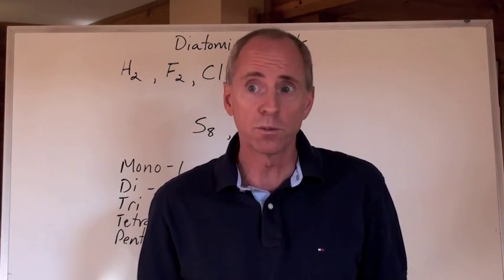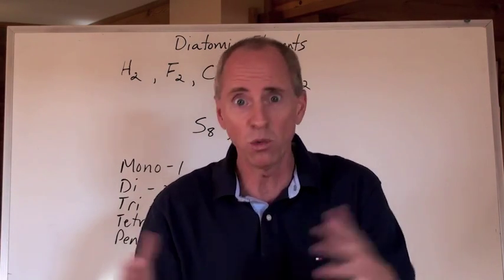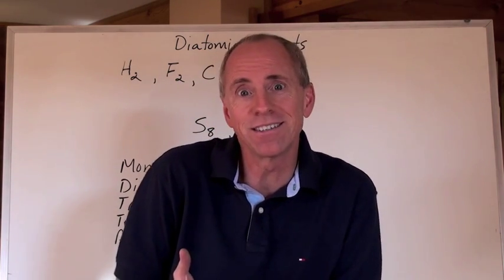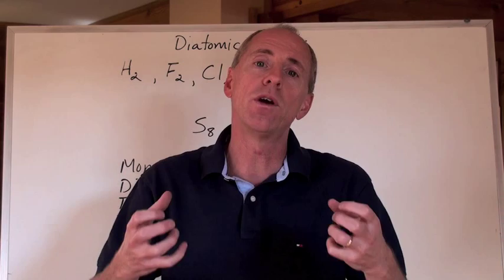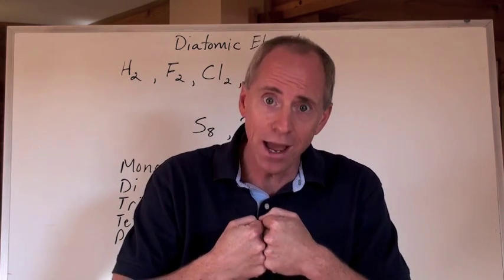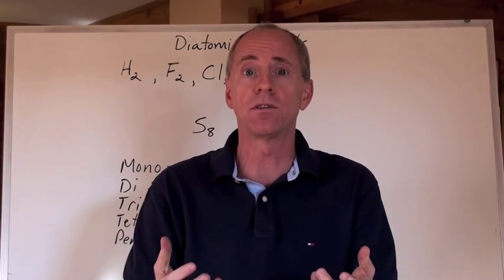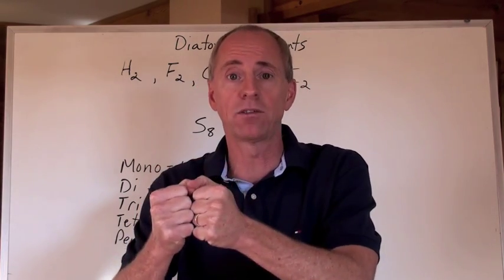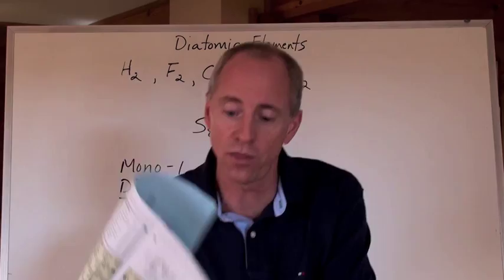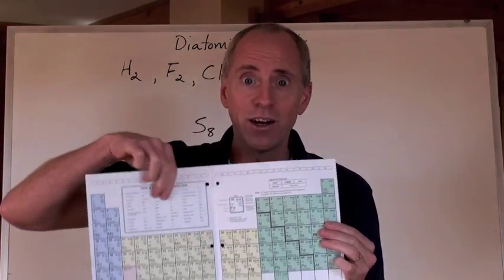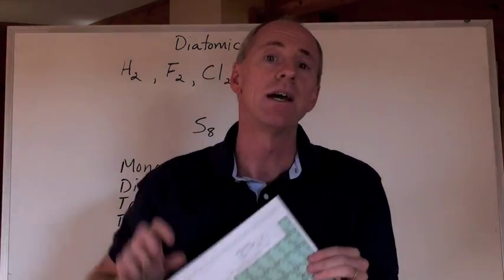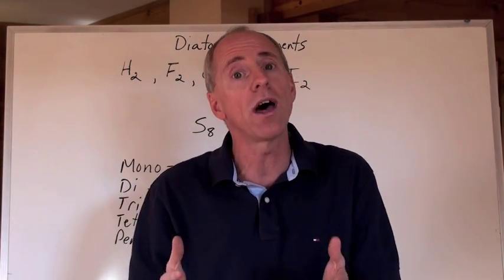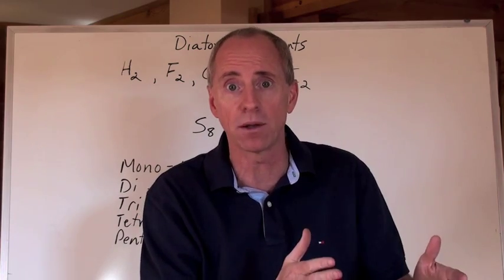Elements on the periodic table, for the most part, except for the noble gases, don't really like to be by themselves. They want to be with somebody else, and that means they're going to bond to other elements to form compounds. When non-metals come together, those are the guys on the right hand side of the staircase, they like to bond by sharing electrons, and that's called a covalent bond, and we call that a molecular compound.